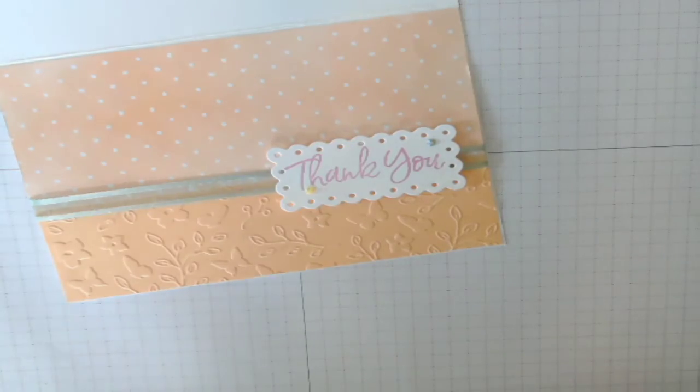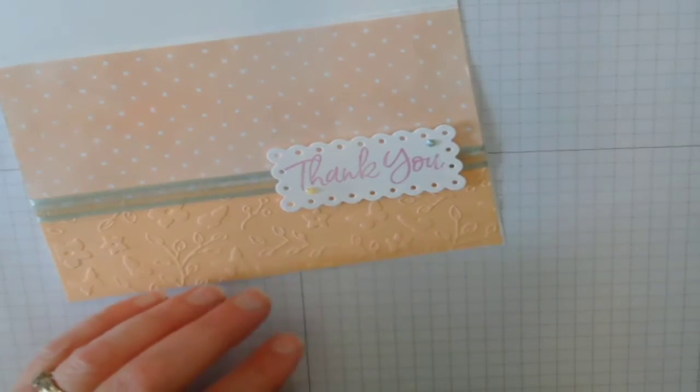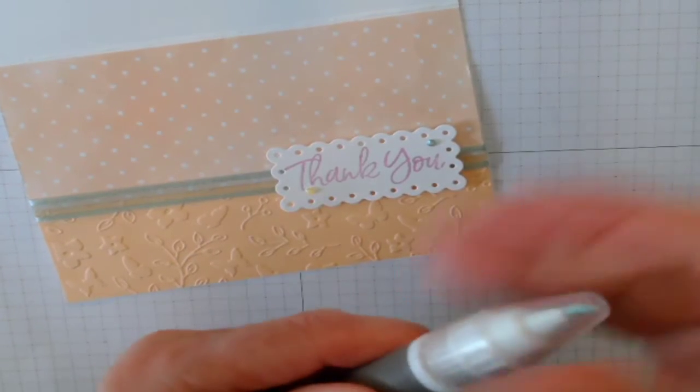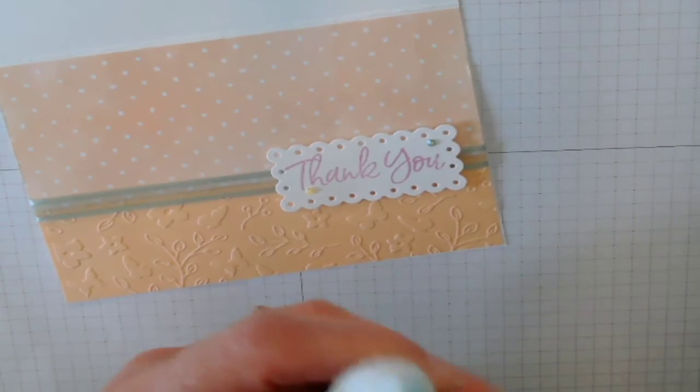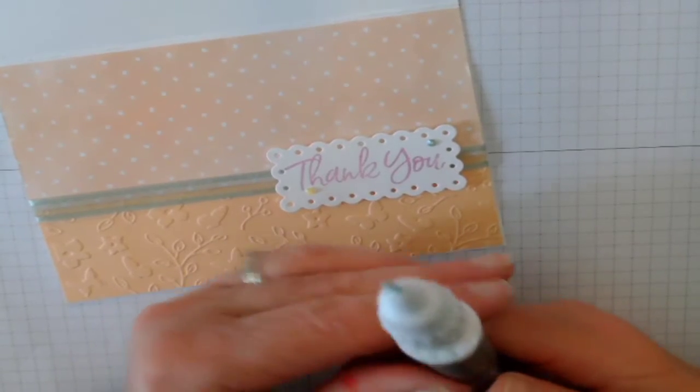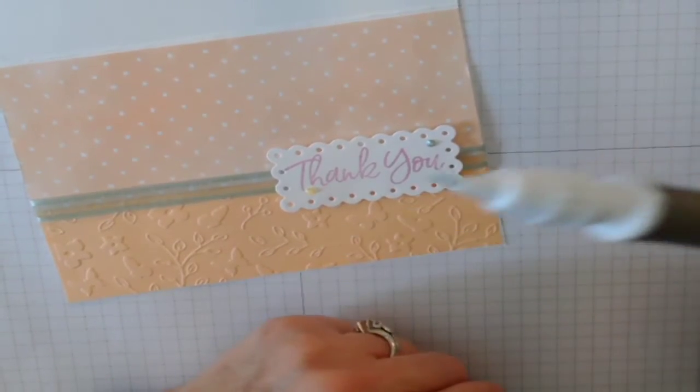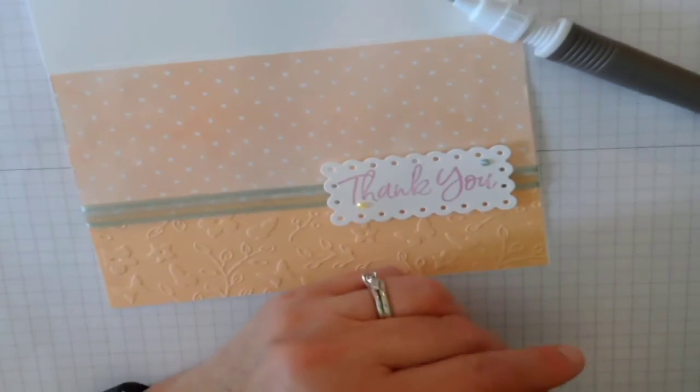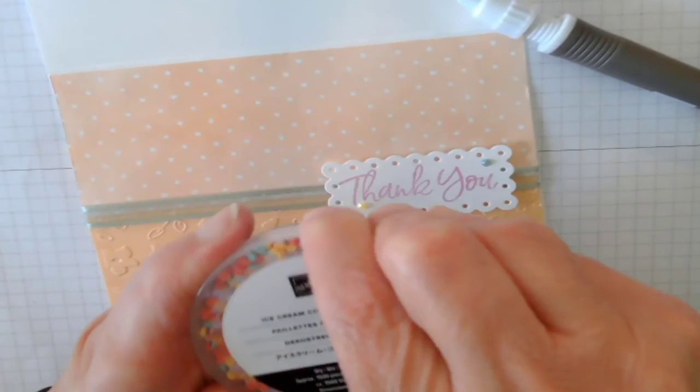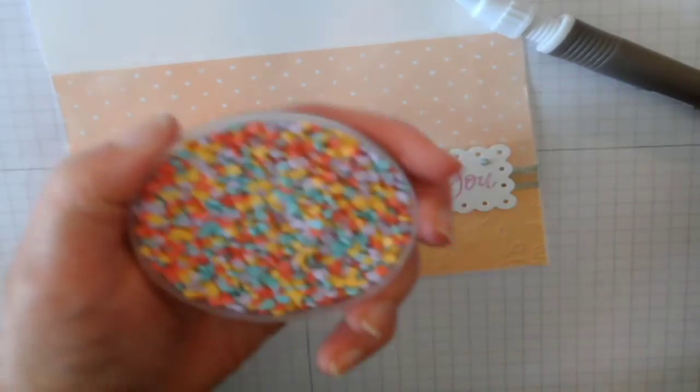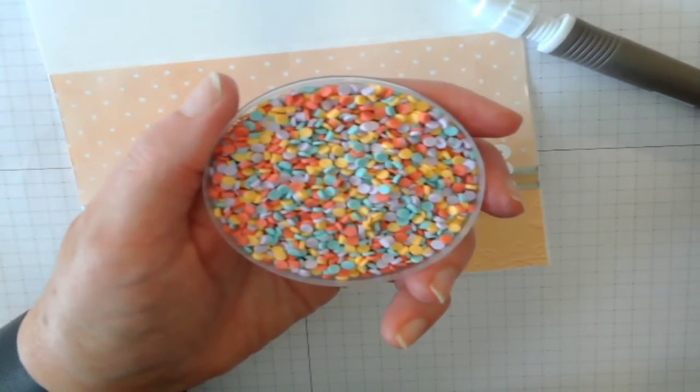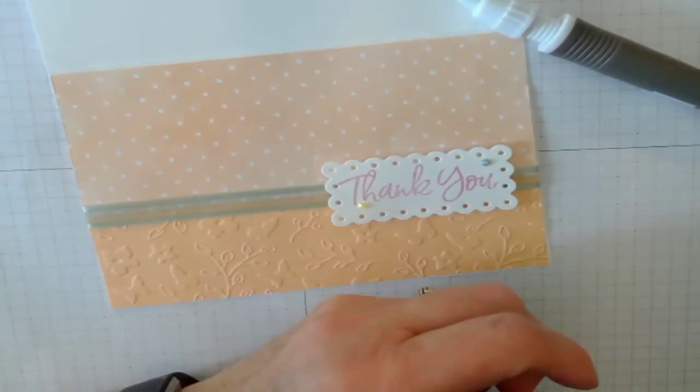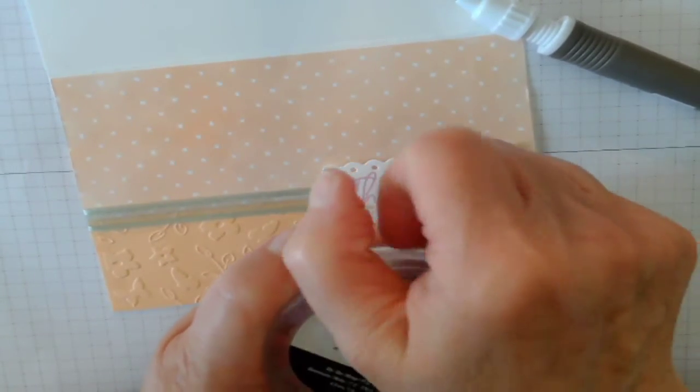Then, the other thing that this tool has is an end that has some putty on it, and that putty helps you pick up small things like sequins that you can put on your card. Earlier, I was working on a card that used these, and boy, did that thing come in handy, because these are really hard to pick up with your fingers. They're so tiny. Today, we're going to use some flowers.